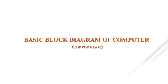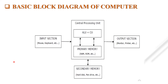Now we proceed with the first topic of Unit 1, the basic block diagram of a computer. This is very important for your GTU examinations. The computer is made up of mainly four components: first, the CPU (Central Processing Unit), which consists of the ALU, Control Unit, and primary memory; second, the input section; third, the output section; and fourth, secondary memory, which includes storage devices like hard disk and pen drive.